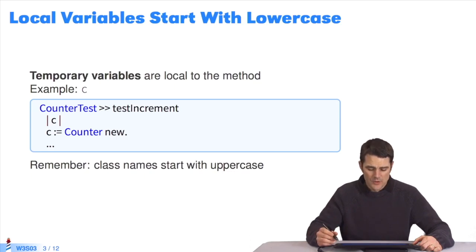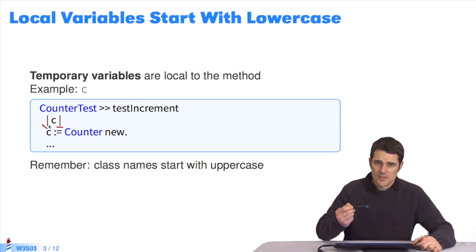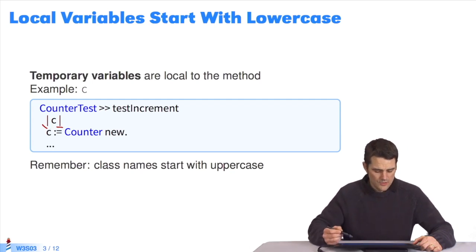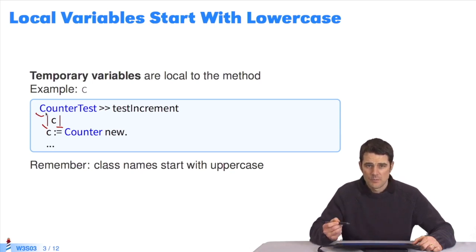Let's start with local variables which start with lowercase. Local variables have one method. They are declared between pipes, the vertical bars. Here, there's a local variable, C. It's local to the method and exists only for its execution. Therefore, it must always start with lowercase. By the way, all the class names start with uppercase because they are shared in the system.